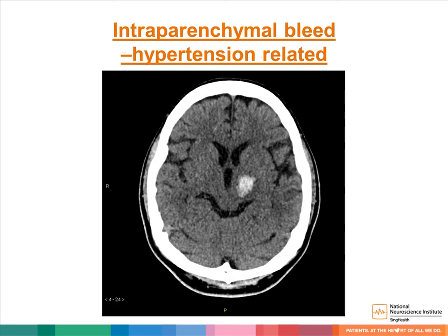Not all patients presenting with clinical symptoms of stroke have an underlying ischemic stroke. Some patients have hemorrhagic strokes. In this patient with uncontrolled hypertension, there is a left thalamic hemorrhage. Do note that hypertensive-related hemorrhages in the brain can occur in the basal ganglia, thalamus, pons, and cerebellum.